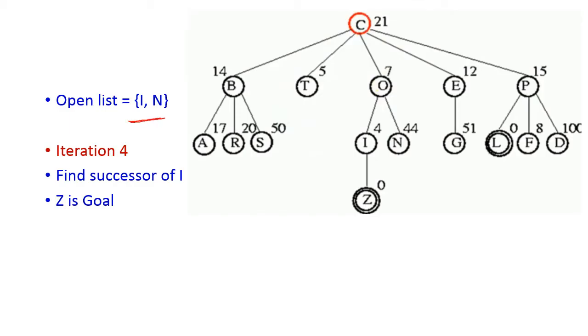In iteration 4, the open list contains I and N. We expand node I. The successor of I is Z, and Z is the goal state. Hence, the program terminates. The path from starting state to goal state is: C → O → I → Z.